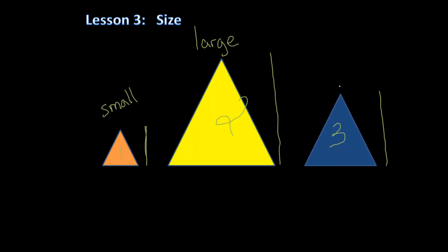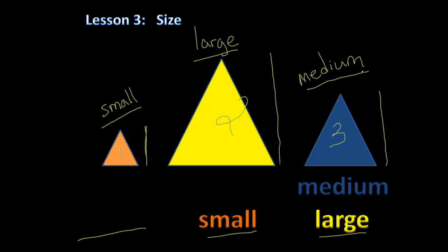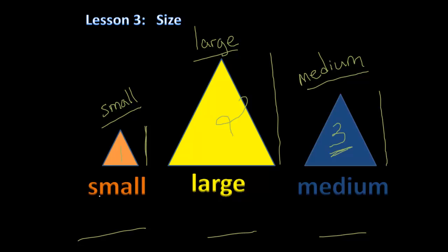Object three seems to be in between the first and second object, which is the middle one — the medium object. Our choices are medium, small, and large. We determined that the first object is the small object, the second is the large one, and the third is the medium object. Let's see if our analysis is correct. The third object is indeed the medium, the first object is the small object, and the second object is the large object.